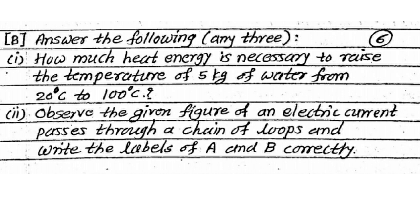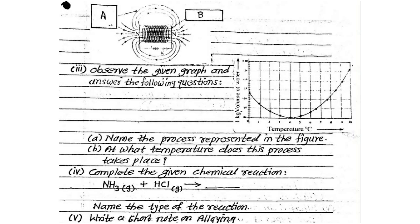Now in question number 2B, answer the following. 5 options are given. You write any 3 correct answers for 6 marks. For example, observe the diagram. Observe the diagram is question asked like this way. You no need to draw the diagram. Only label what is A and what is B. A is what? Magnetic field lines. And B is what? That is a solenoid.